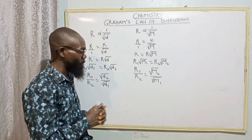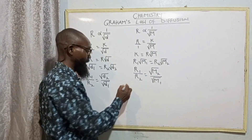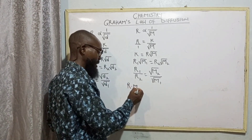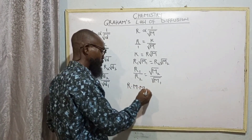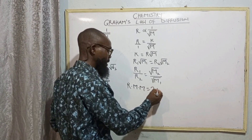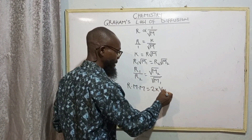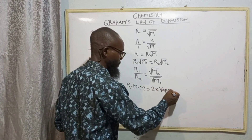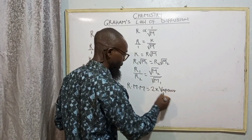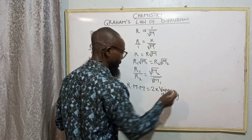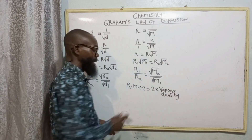We should recall that relative molecular mass is equal to 2 multiplied by vapor density. This is the formula for calculating molecular mass.